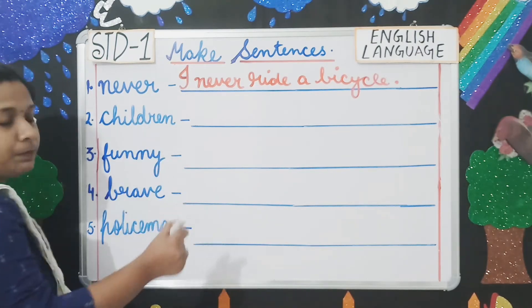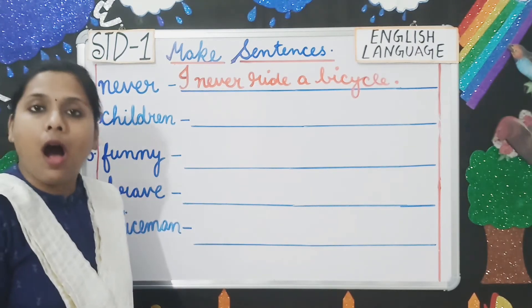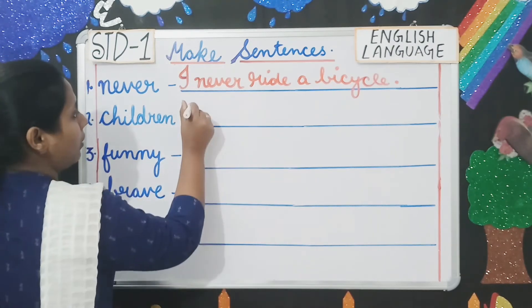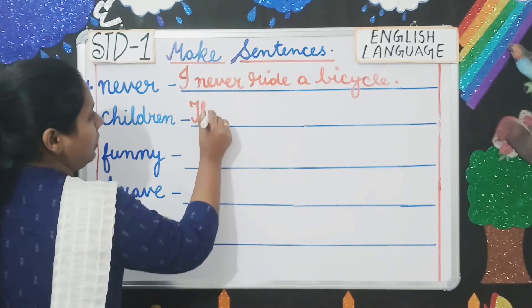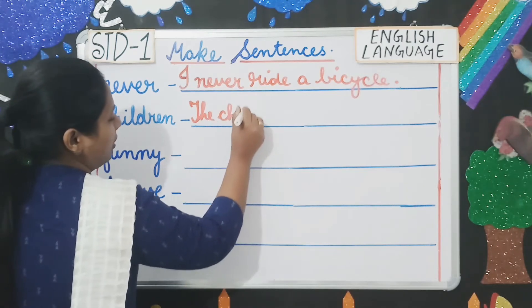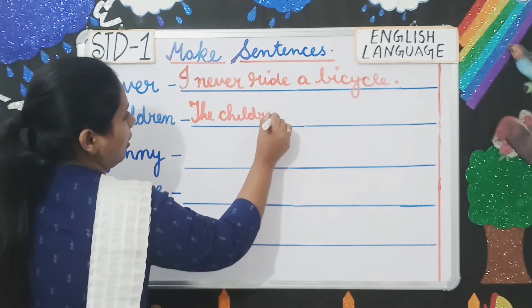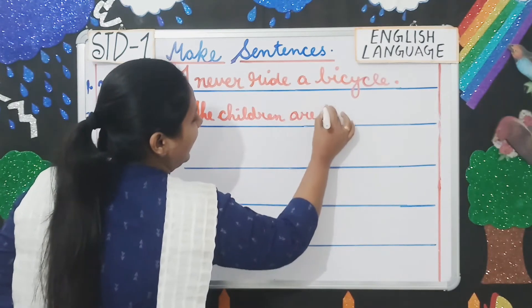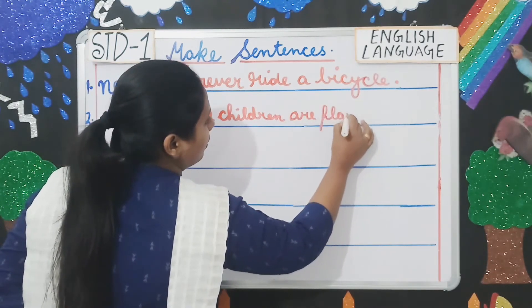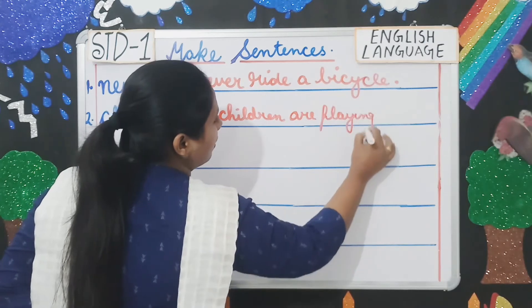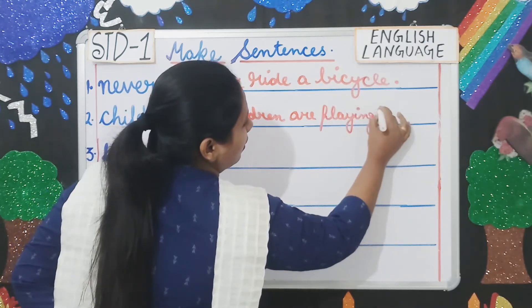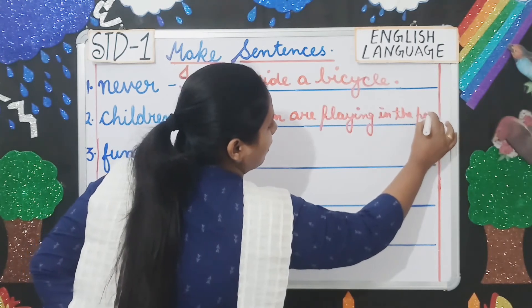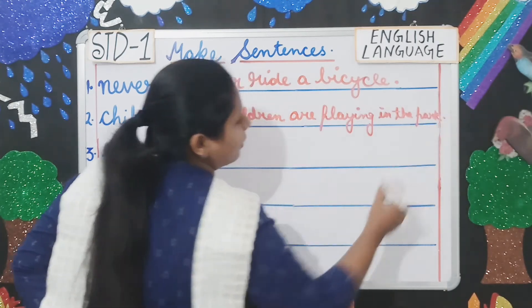Number two — 'Children': you can write 'The children are playing in the park.' Your 'T' will be capital.